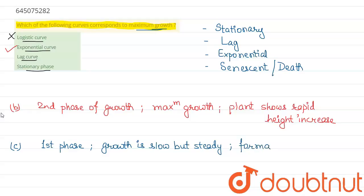Coming to the fourth option, we have the stationary phase. So stationary phase, as the name suggests, is the third phase, and in this, the plant exhibits declining growth activity.